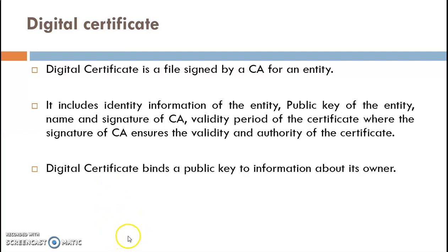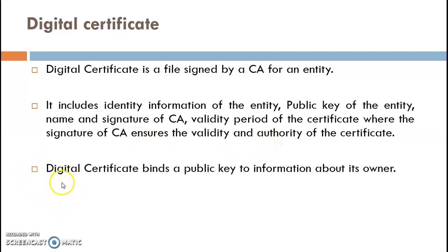A digital certificate is a file signed by a CA for an end user or entity. It includes various kinds of information: the identity information of the entity, the public key of the entity, the name and signature of the Certification Authority, and the validity period of the certificate. The signature of the CA ensures the validity and authority of the certificate. The certificate includes all necessary information about the owner along with the CA's signature, and the digital certificate binds the public key to information about its owner.